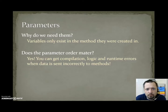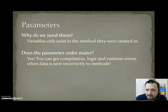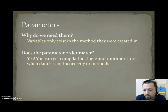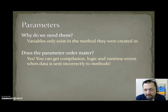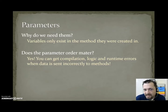Parameters — why do we need them? If we make a variable in main, shouldn't it exist everywhere? No. Variables only exist in the method they were created. Main is actually a method, and we create variables there. But we're going to have methods that are separate from main in another location, so all the variables we make in main will not exist in the other method. What we have to do is send our data from main to these other methods by passing the data that our variables contain as parameters.